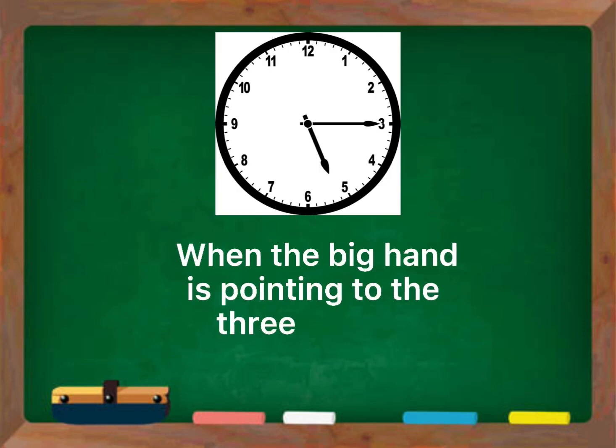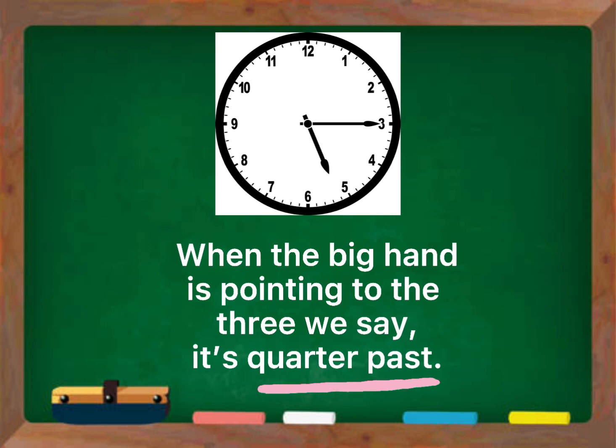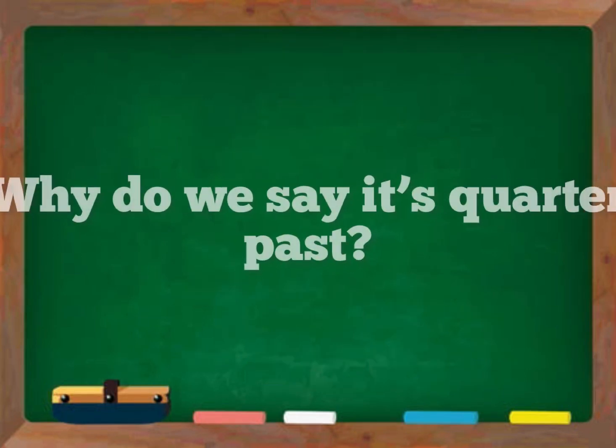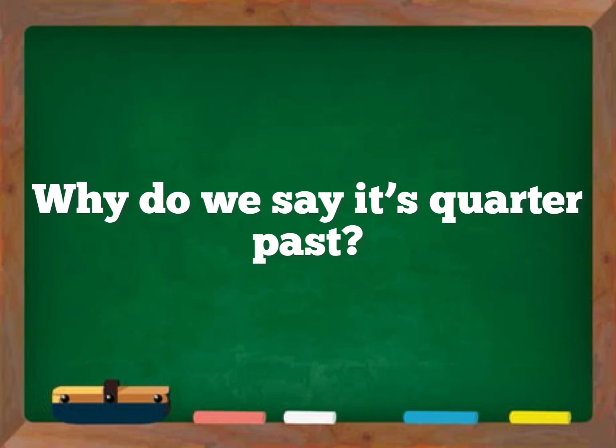When the big hand is pointing to the three, we say it's quarter past. Why do we say it's quarter past? Because a quarter of the hour has passed.